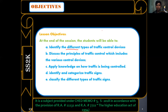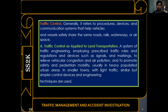Traffic control generally refers to procedures, devices, and communication systems that help vehicles and vessels safely share the same roads, rails, waterways, or airspace. All procedures, devices, and communication systems used to maintain safety for travelers — whether on land, water, rails, or air — are encompassed under traffic control.